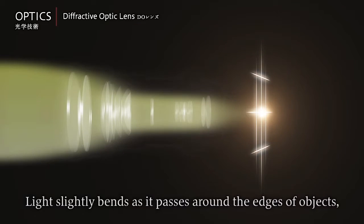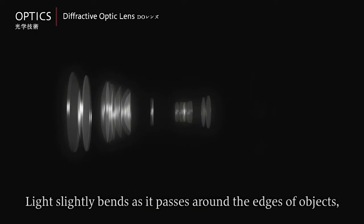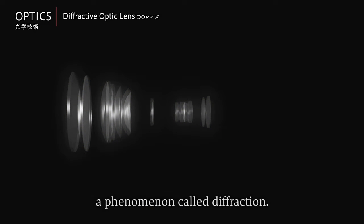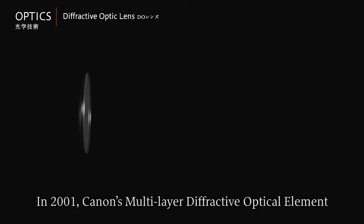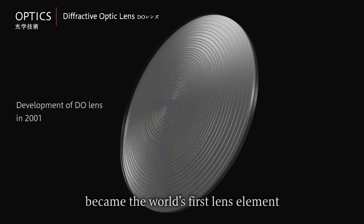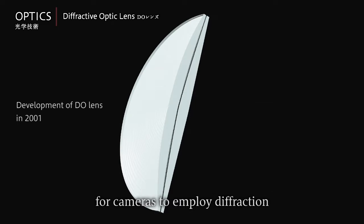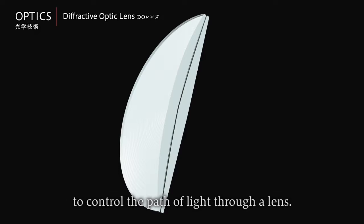Light slightly bends as it passes around the edges of objects, a phenomenon called diffraction. In 2001, Canon's multi-layer diffractive optical element became the world's first lens element for cameras to employ diffraction to control the path of light through a lens.